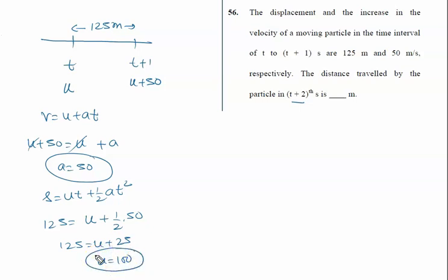Now distance traveled in (t+2) seconds - you can make a mistake here when you use the formula s_nth = u + (a/2)(2n-1).